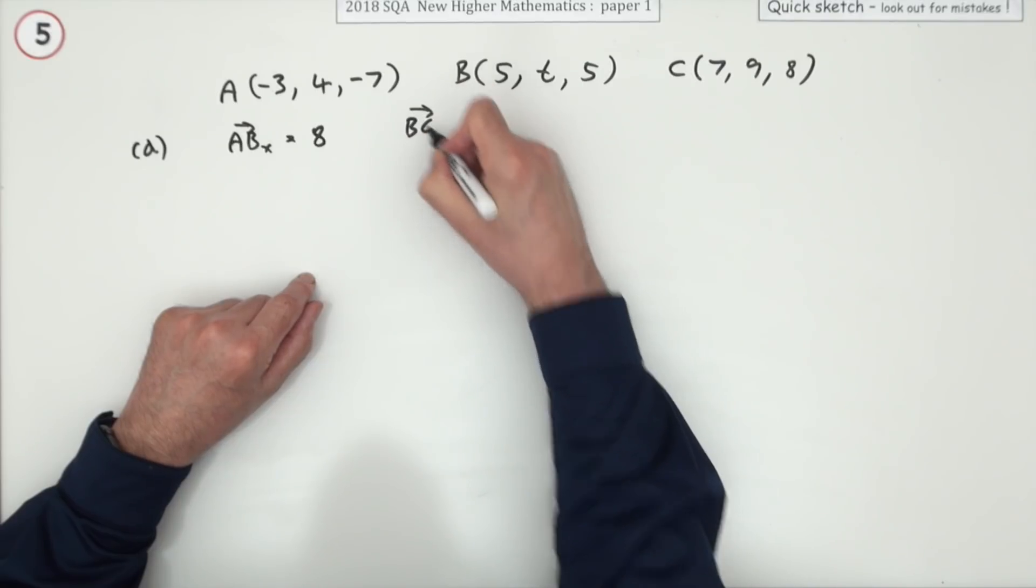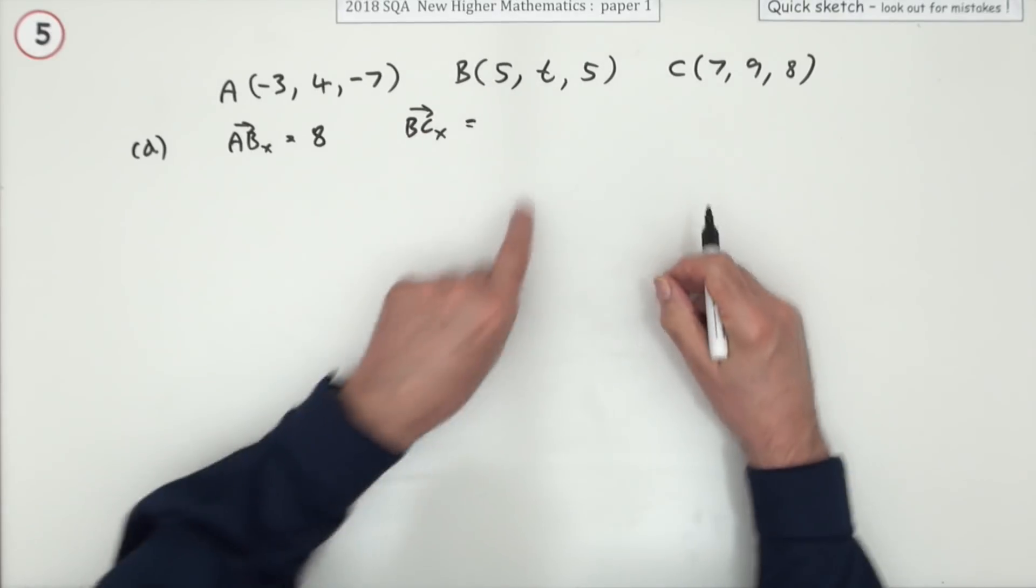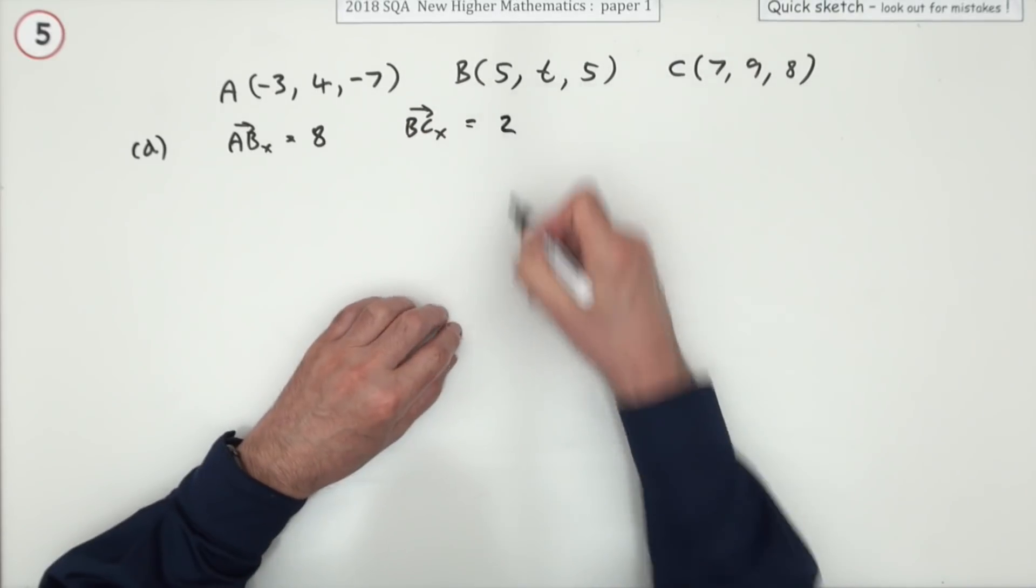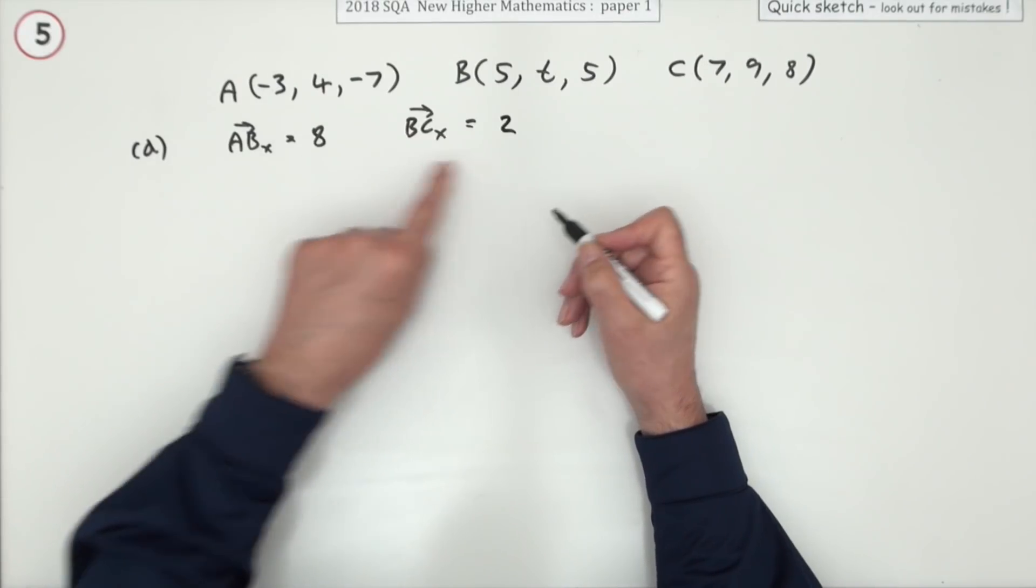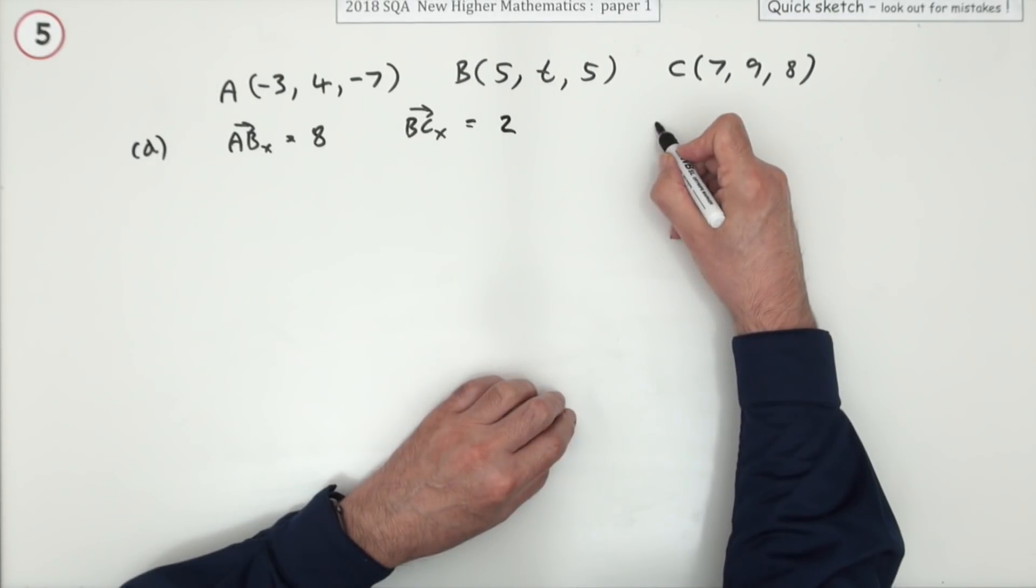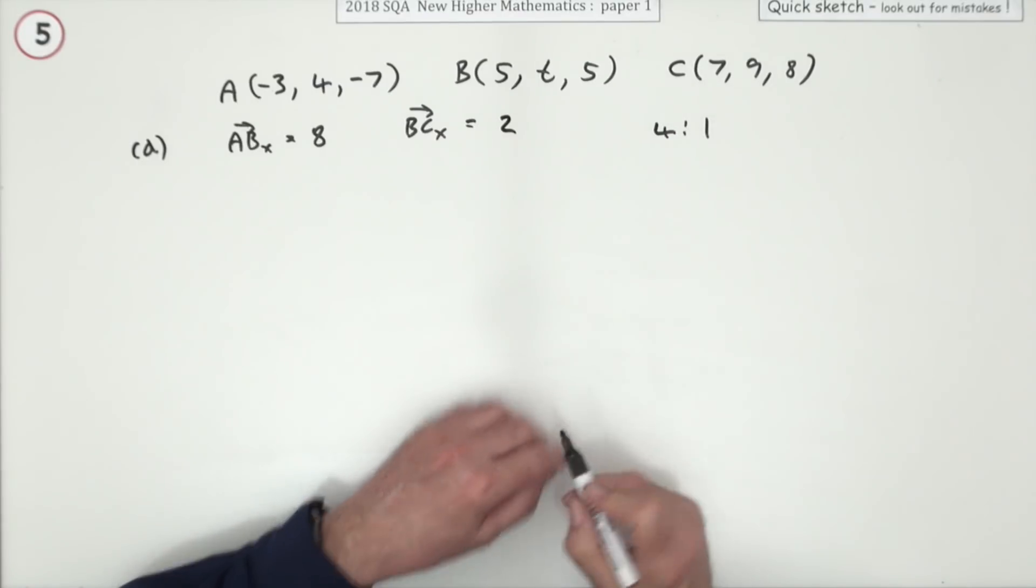And going from B to C, just taking the x-components, you're going from five to seven, which is two. So that means it's cutting in the ratio of eight to two, so the answer will be, knock that down, four to one.